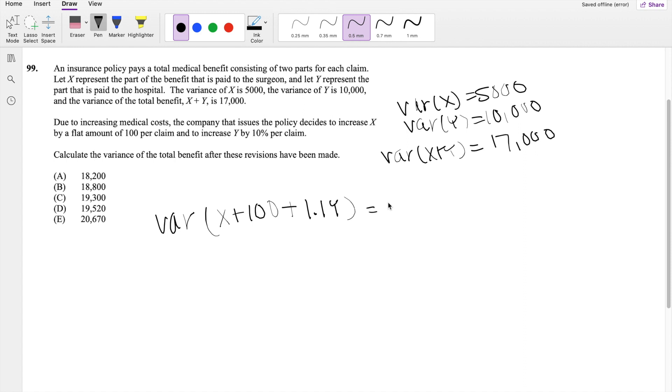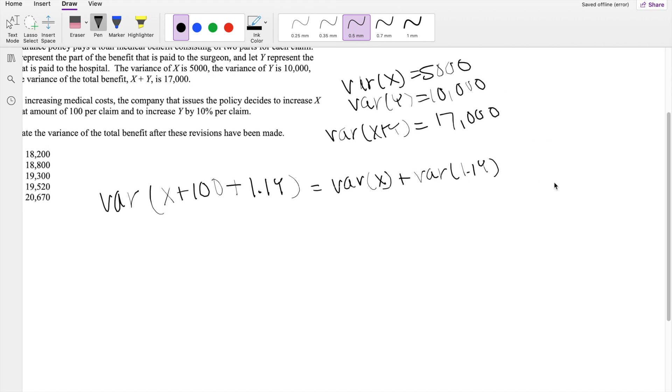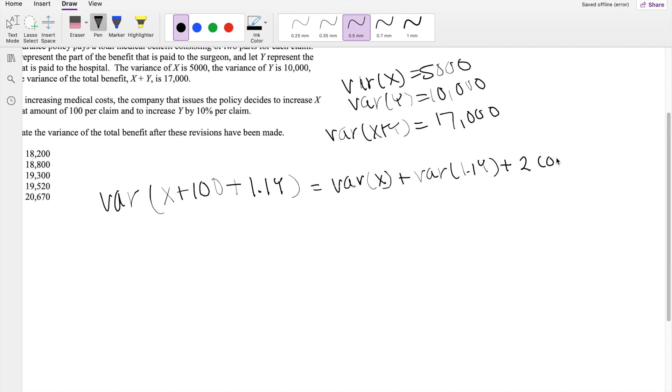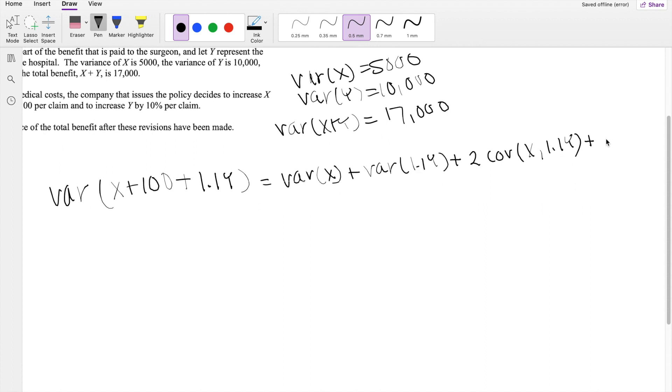This we can say is equal to the variance of x, right, plus the variance of 1.1y. But because we don't know if it's independent or not, we have to make sure we add that 2 times the covariance of x and 1.1y.